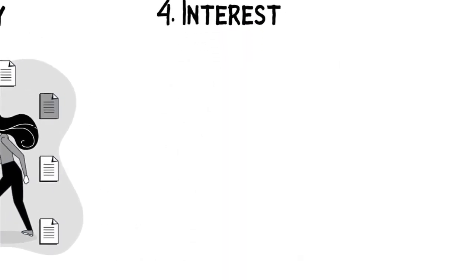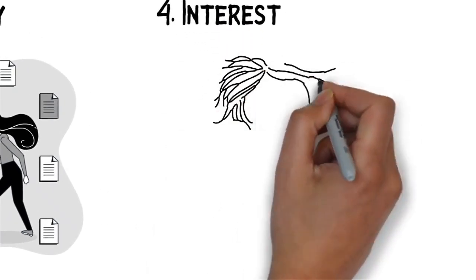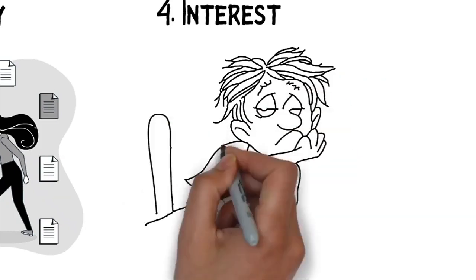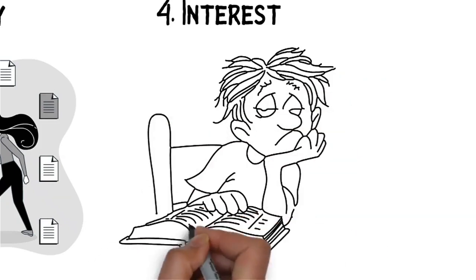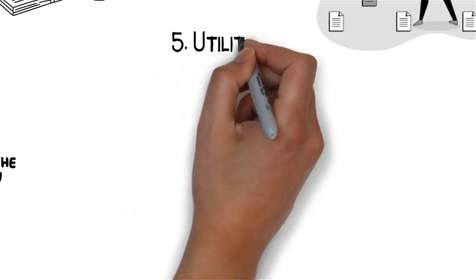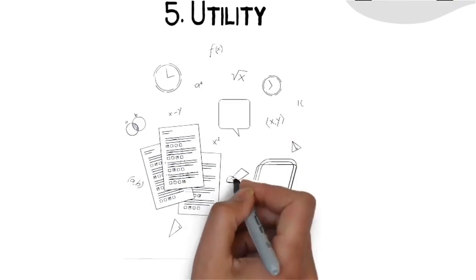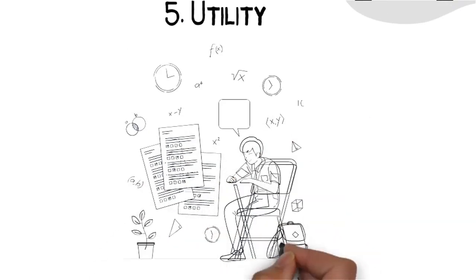Number four is interest. We have to find out what is interesting for our students by also considering their developmental level as well as their background. Number five is utility. As future teachers, we must assure our content will be useful in the life of our students at present or in the future.